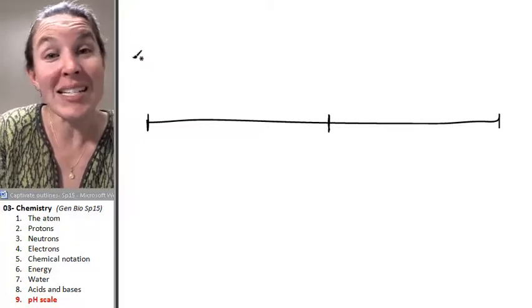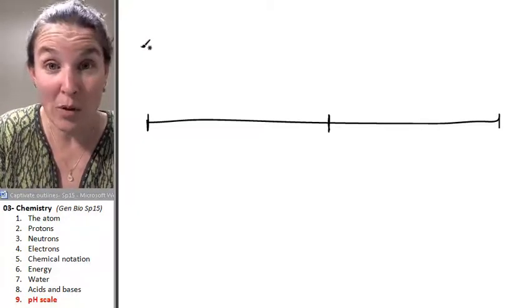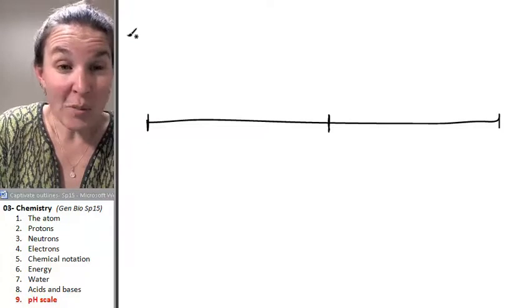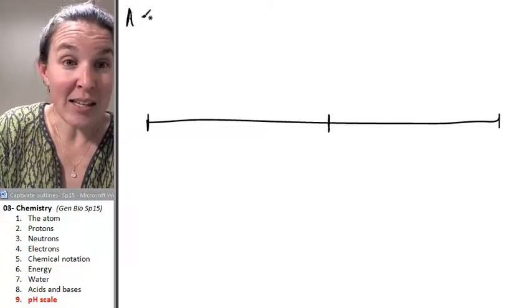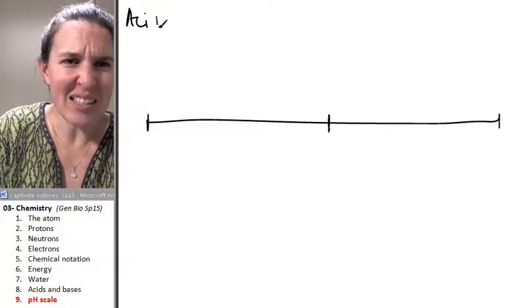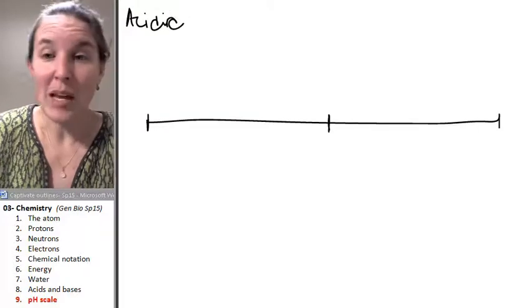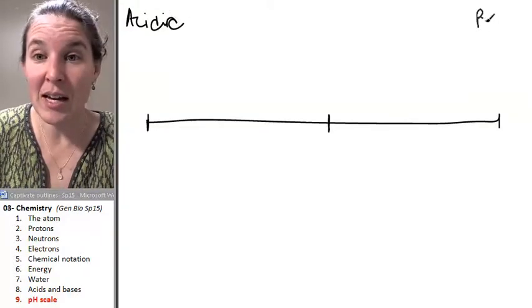I want you to label one end acidic and one end basic. I'll tell you right now, it doesn't matter which end you label. I'm going to randomly choose this side to label as acidic, and I'm going to label this side as basic.